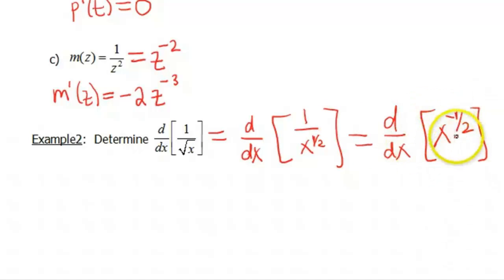Now I have something written as x to a power, so I can go ahead and do my derivative. In this case, my n is negative 1/2. So I have negative 1/2 x to the negative 1/2 minus 1. That's negative 1/2 minus 2/2 gives us negative 3/2. And that would be our final answer.